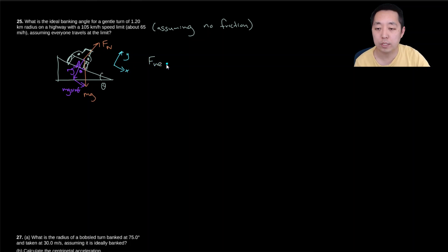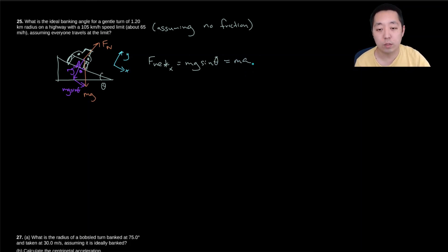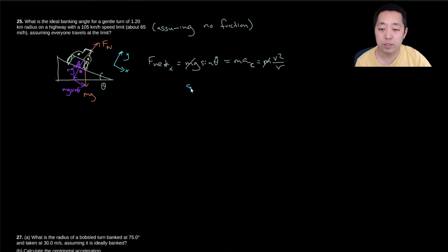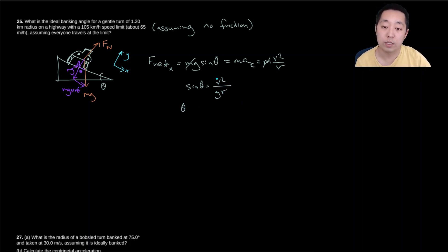The net force in the x direction equals mg sin θ. Net force always equals ma, and the acceleration here is centripetal acceleration: mv² over r. The masses cancel, giving sin θ = v²/gr. So theta equals the inverse sine of v²/gr.